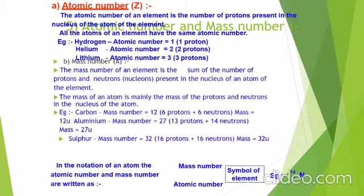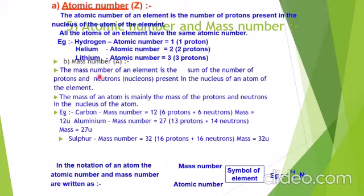Our next topic is atomic number, represented by Z. The atomic number of an element is the number of protons present in the nucleus of an atom of that element. All atoms of an element have the same atomic number. Hydrogen has atomic number one, helium two, lithium three. The mass number of an element is the sum of the number of protons and neutrons — protons and neutrons together are called nucleons — present in the nucleus of an atom.